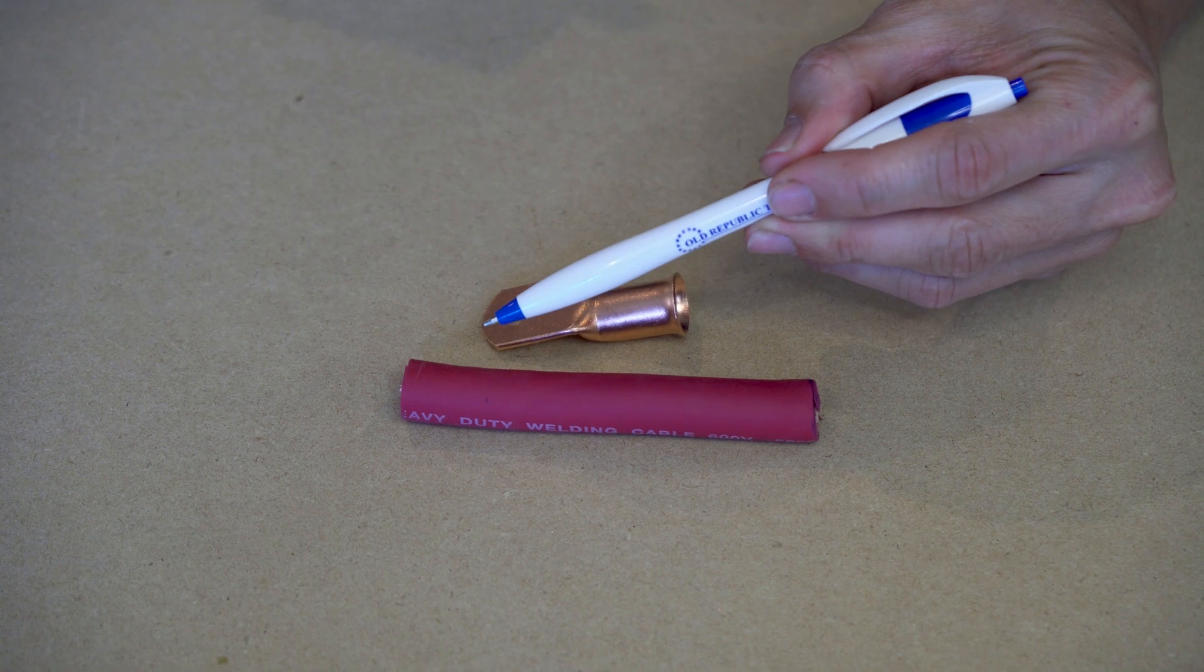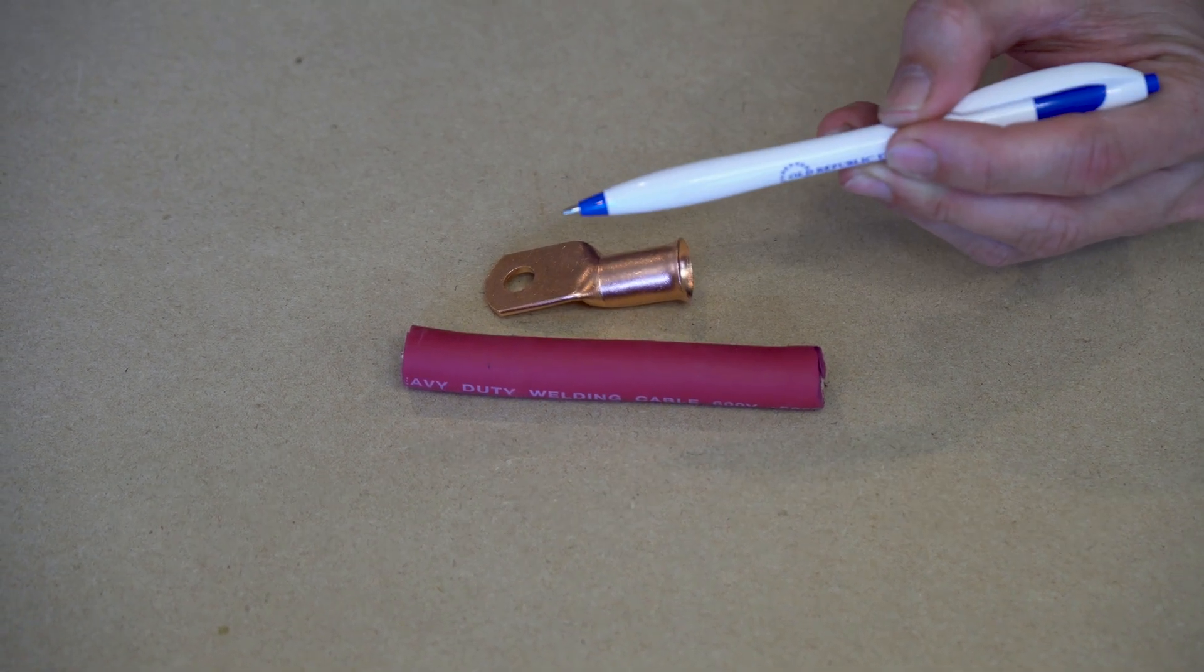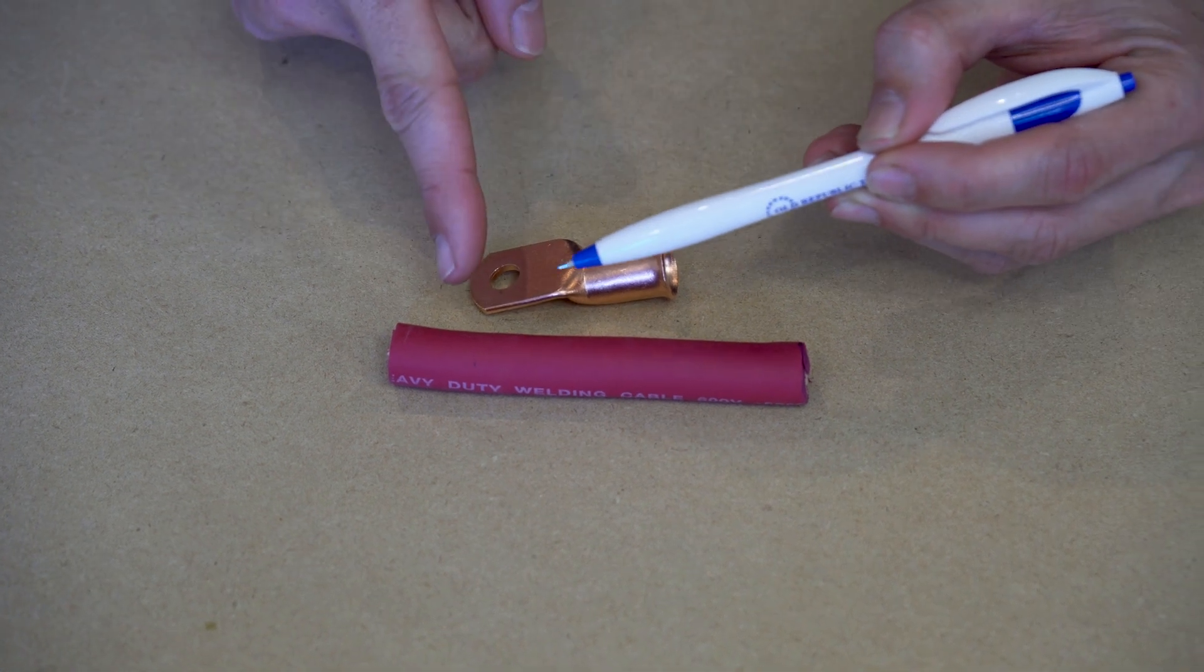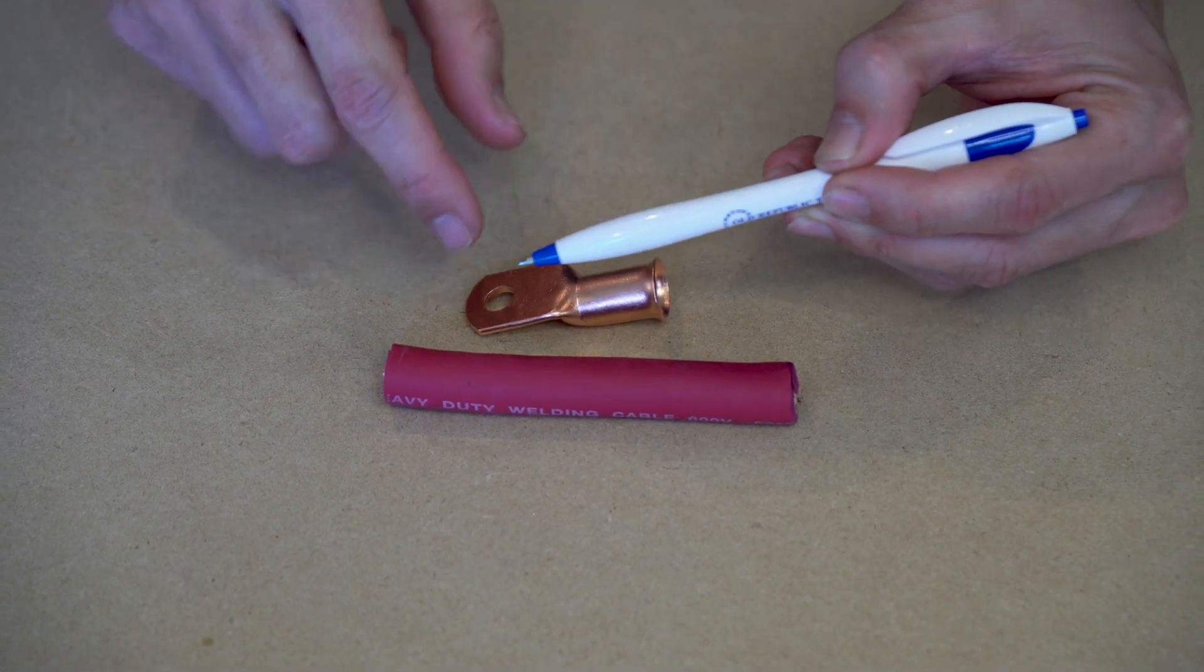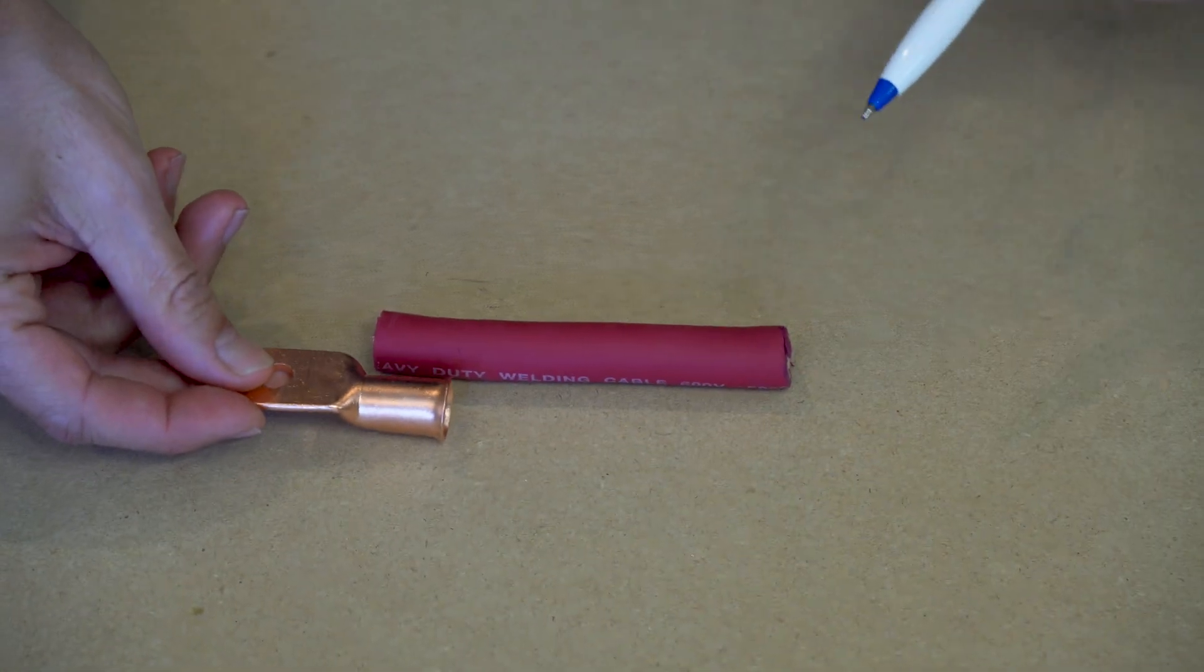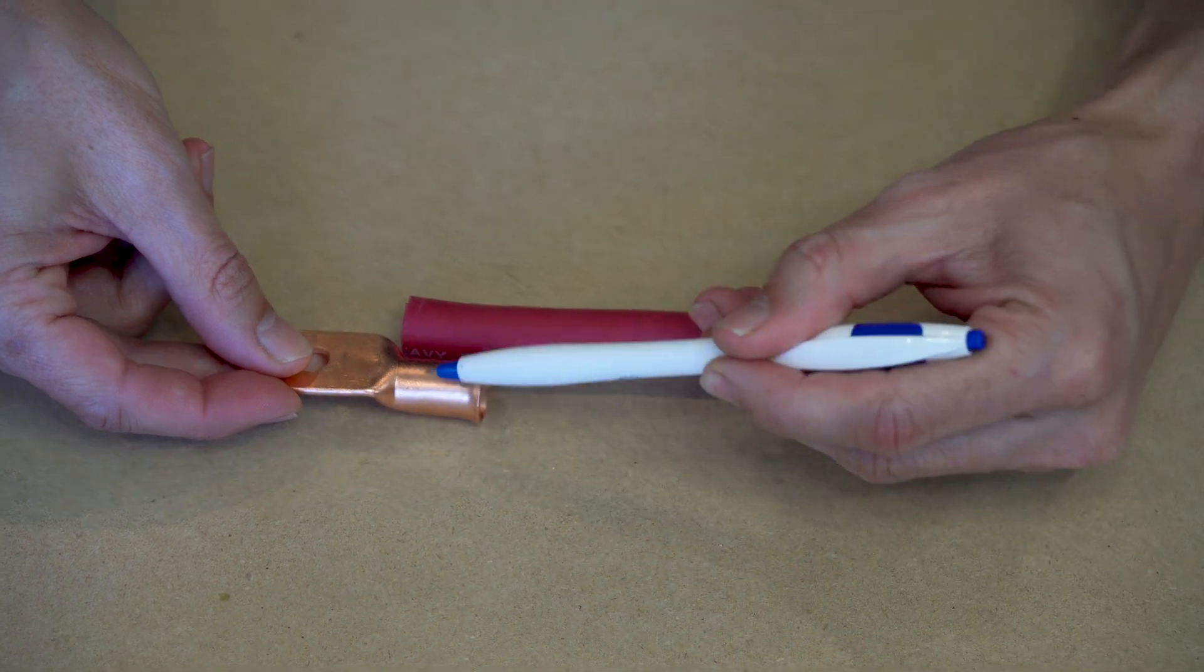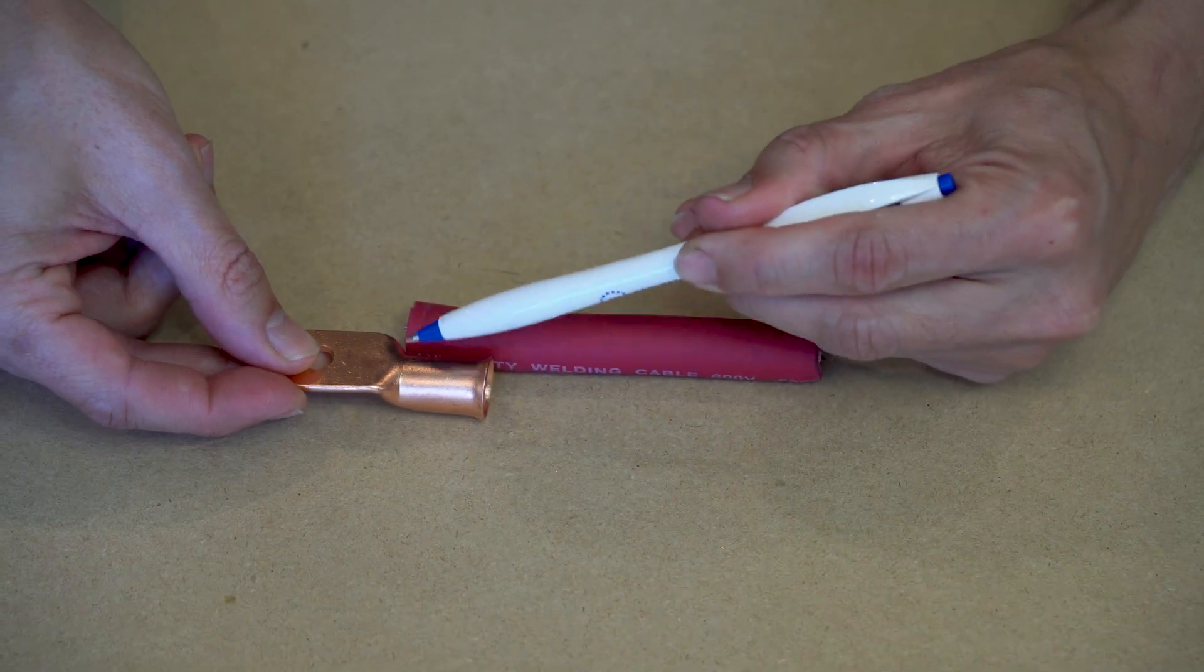Next, we have to cut away the thick insulation jacket to expose the copper conductors. But before you do, you'll want to measure and mark where on the jacket you'll be cutting with this pen. We like to place the wire end side by side next to the lug, with the tip of the wire aligned with the end of the copper barrel, like such.